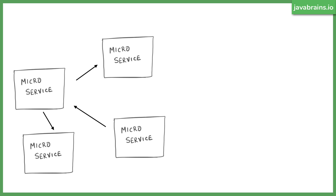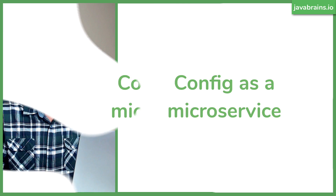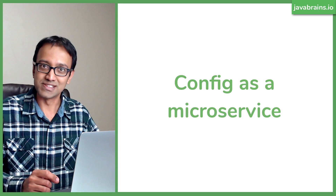The obvious answer: take that out and create a separate configuration service. Have all these services talk to this separate configuration service, have it be the single source of truth, and have it manage all the information. So no matter what the microservice is, it all refers to the same source of truth — the same connection string or whatever configuration it needs. So we are looking at config as a separate microservice.